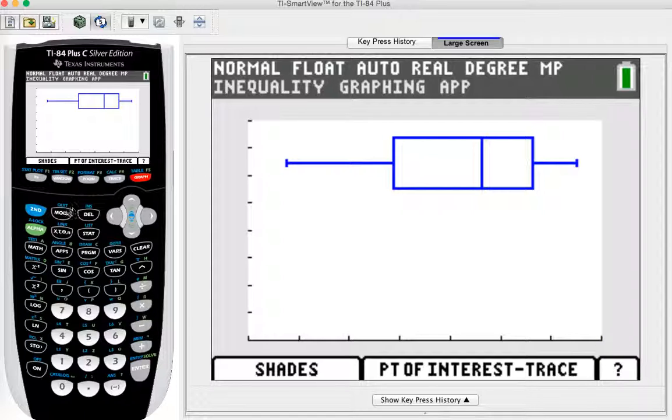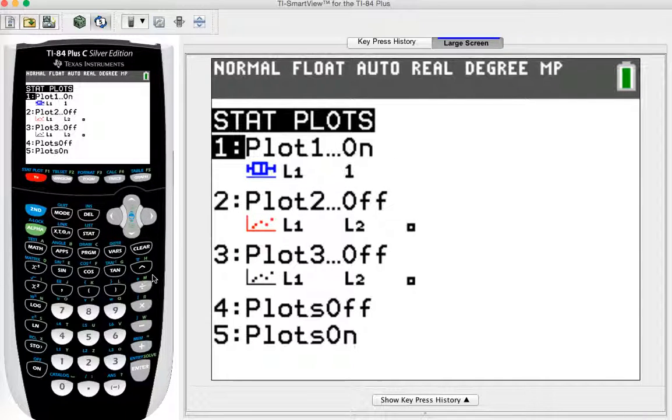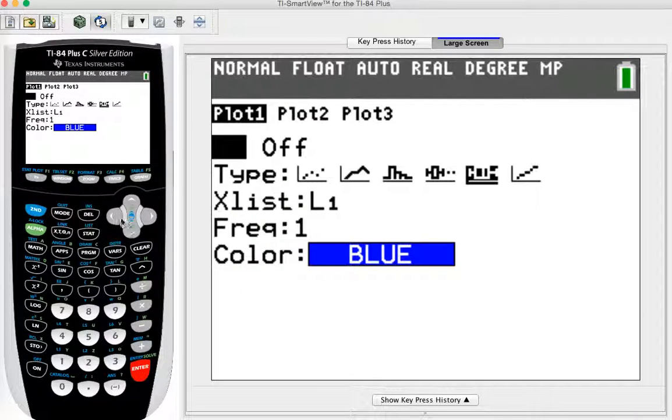Now the other thing people forget to do is turn this off when you're done with this and you want to do regular graphing. You again have to go to second stat plot. And if you want it off, you go in and turn it off. If you wanted to change the list that you're accessing, you could change this to L2. Or you could just do plot one and plot two and different things are different lists. And that works as well. Please let me know if you have any questions.